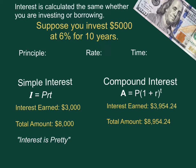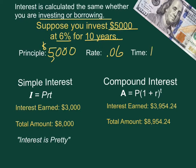Interest is calculated the same whether you are borrowing or investing. Let's suppose you're going to invest $5,000 at 6% for 10 years. Your principal here is the main amount that you're borrowing or investing. Your rate needs to be expressed as a decimal so it's .06 and your time in years is 10.